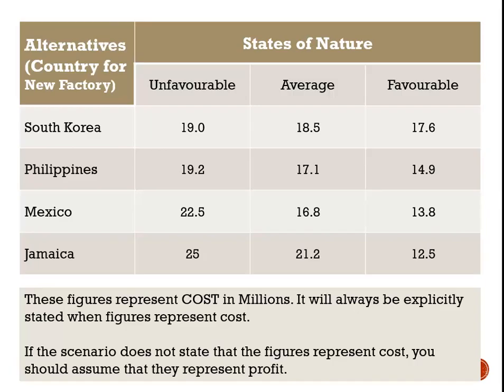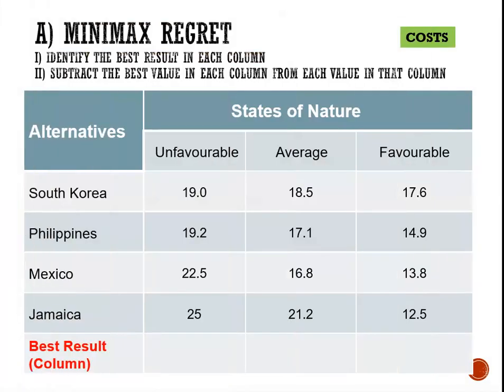Here we look at our payoff table for the alternatives with alternative countries for choosing our new factory. We're looking at South Korea, Philippines, Mexico, or Jamaica, and the payoffs in this table represent costs in millions. In our first column, the unfavorable state of nature, we have 19 million, 19.2 million, 22.5 million, and 25 million. Since these figures represent cost, we choose the lowest cost — 19 million — as the best payoff for the unfavorable state of nature.